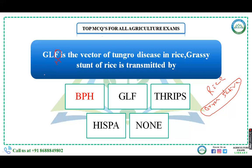The question is about grassy stunt disease of rice, which is a viral disease transmitted by BPH (Brown Plant Hopper), GLH (Green Leaf Hopper), thrips, hispa, and none. Grassy stunt of rice is transmitted by BPH — that is the right answer. So BPH transmits grassy stunt, while Green Leaf Hopper is the vector of Tungro disease. You get two pieces of information from one question.